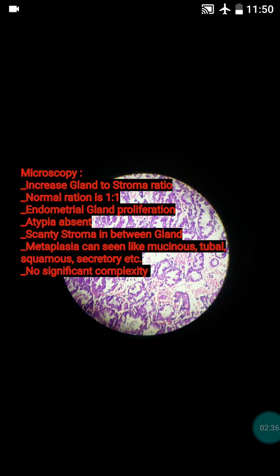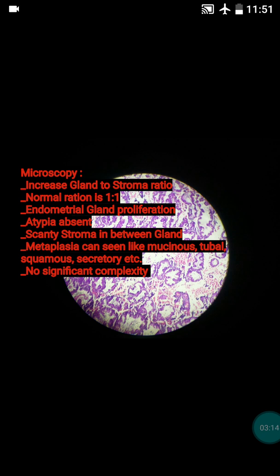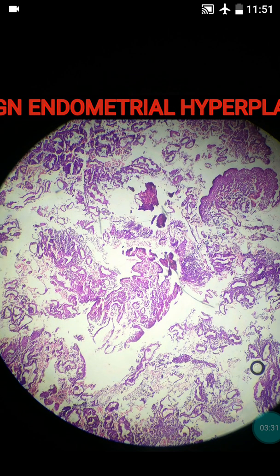Now we discuss how to diagnose endometrial hyperplasia histopathologically. The clinical presentation is usually excessive bleeding. We received dilatation and curettage material from a 27-year-old female patient. On microscopic analysis, the diagnosis was endometrial hyperplasia. The key features: gland to stroma ratio is increased beyond 1:1, meaning glands are more than stroma. In benign endometrial hyperplasia, atypia is typically absent, and there is scanty stroma between the glands.